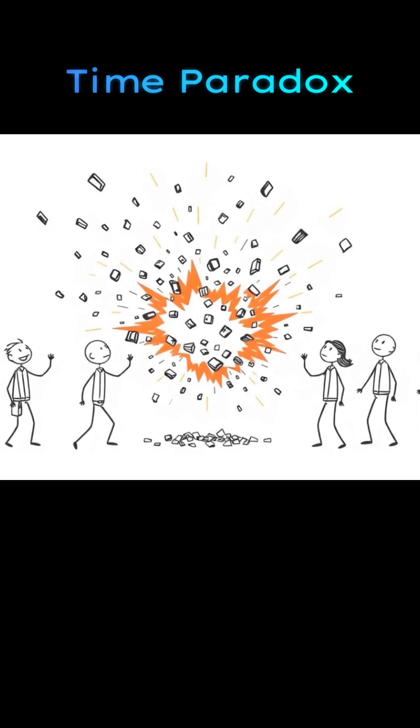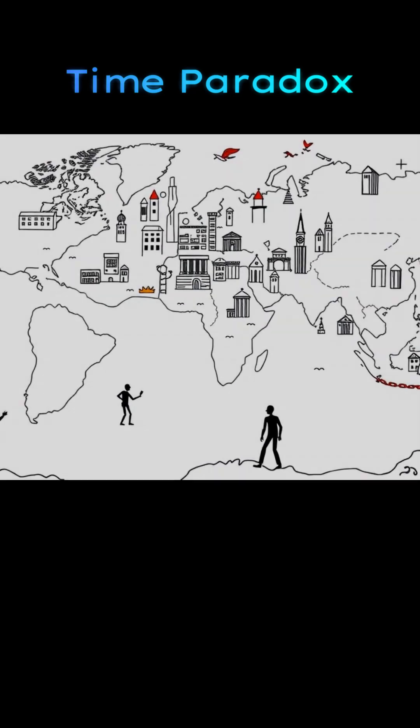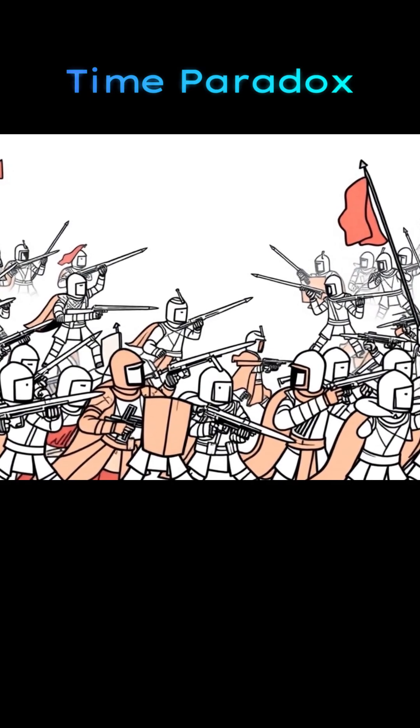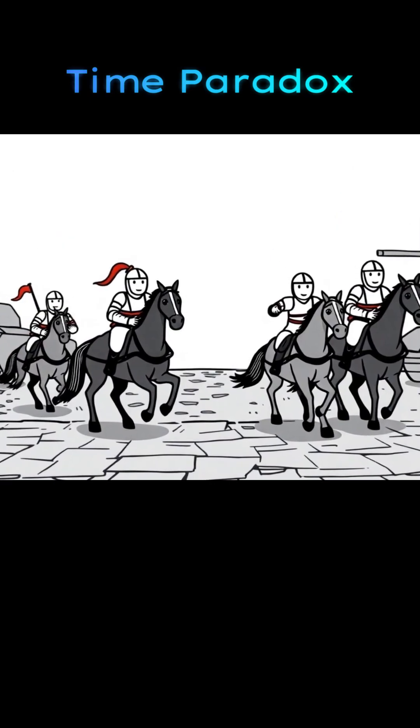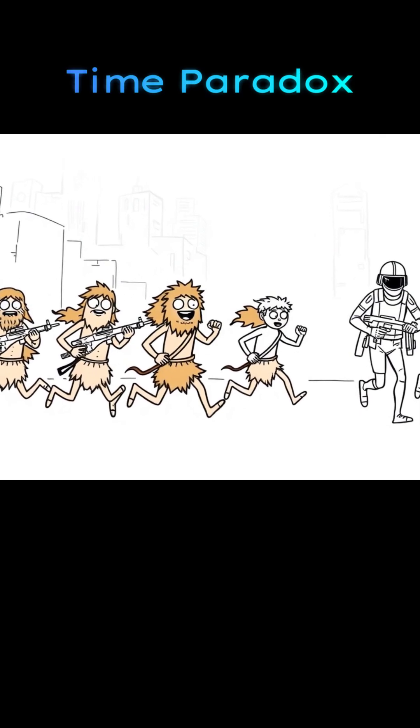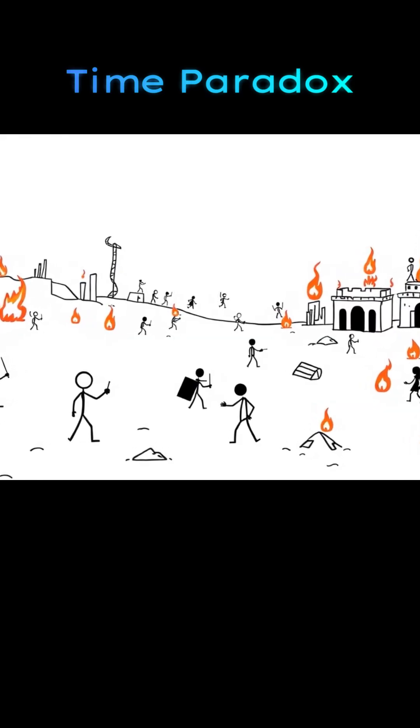The past and future collide violently. Earth becomes a mosaic of broken ages. Armies from different centuries clash in chaos. Knights ride against tanks on crumbling highways. Cavemen chase soldiers through glowing cities. Civilizations overlap and destroy each other.